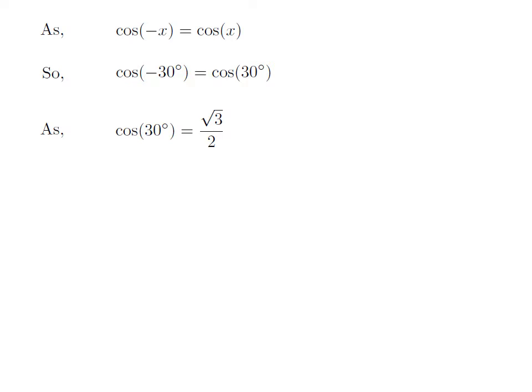We know the value of cosine of 30 degrees is equal to square root of 3 upon 2. So, we get the value of cosine of minus 30 degrees is equal to square root of 3 upon 2.